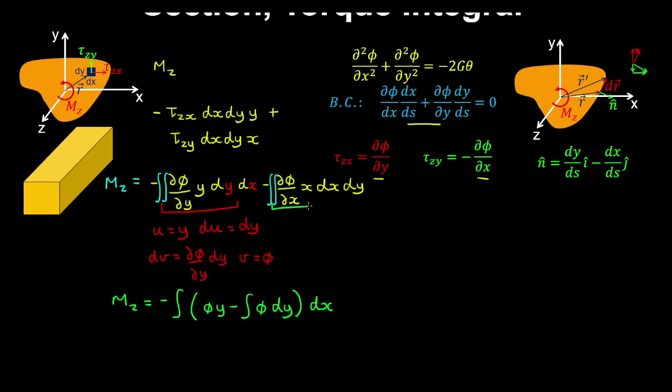If you evaluated this integral here by parts, you'd get a similar expression. What we'd get is minus the integral of phi x minus the integral of phi dx. We're integrating this with respect to y. Therefore, these integrals here are the same. So we have 2 times the integral over the area of phi dx dy.